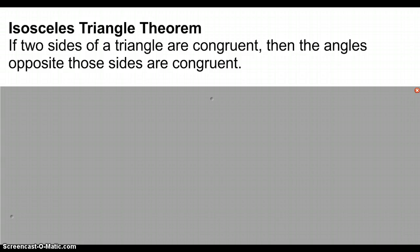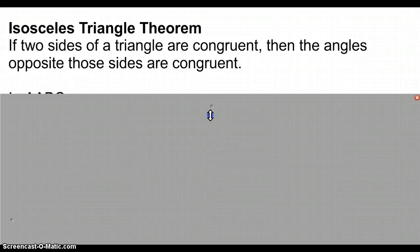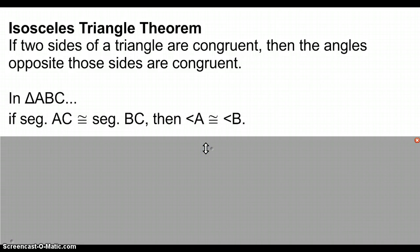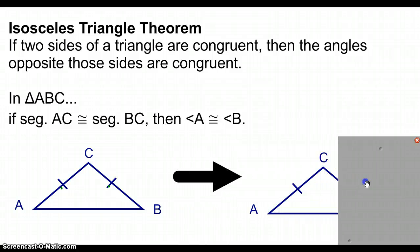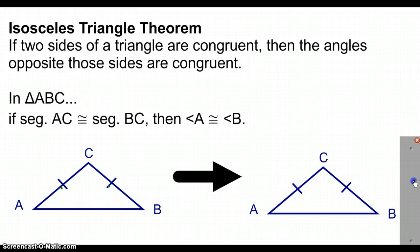The isosceles triangle theorem says that if two sides of a triangle are congruent, then the angles opposite those sides are congruent. For example, in triangle ABC, we have segment AC and segment BC — they are congruent. If that is the case, then we can say that angle A and angle B are also congruent.